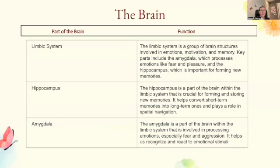The limbic system is a group of brain structures involved in emotion, motivation, and memory. Key parts include the amygdala, which processes emotions like fear and pleasure, and the hippocampus, which is important for forming new memories. The hippocampus is crucial for forming and storing new memories — it helps convert short-term memories into long-term ones and plays a role in spatial navigation. The amygdala is involved in processing emotions, especially fear and aggression, and helps us recognize and react to emotional stimuli.